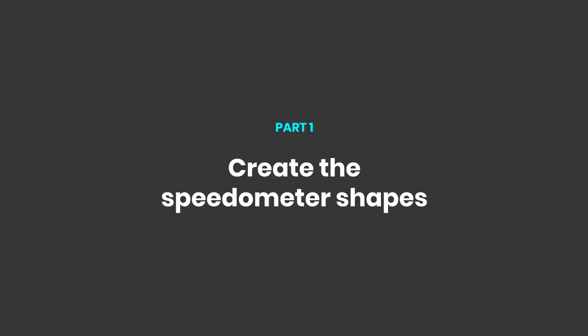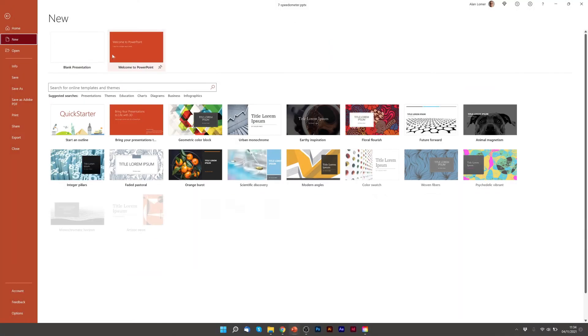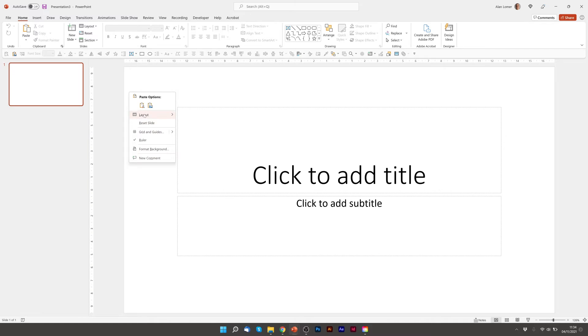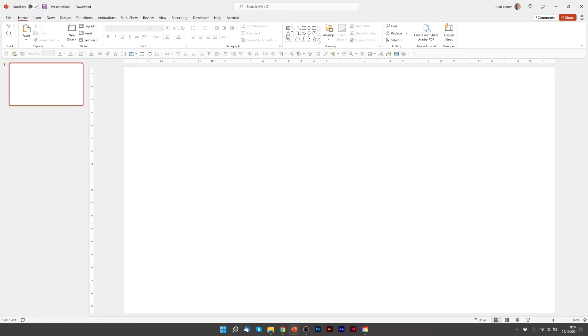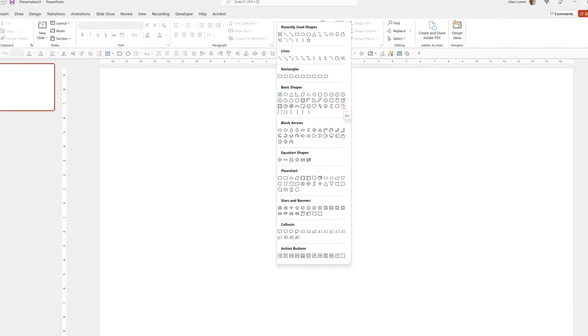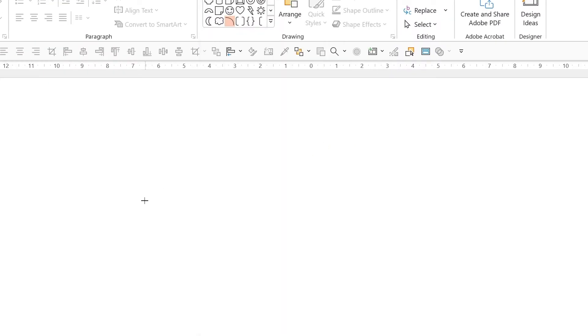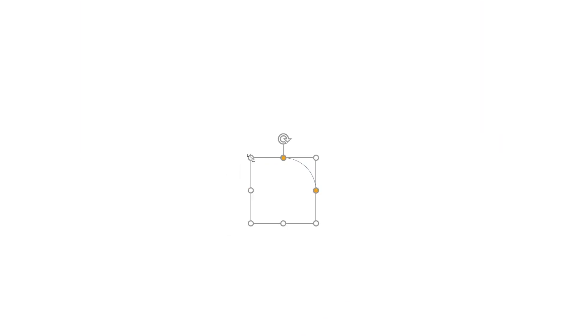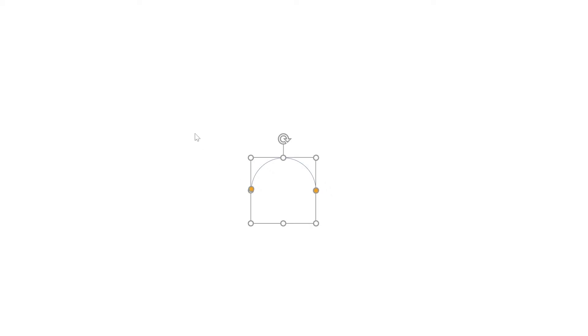First we're going to go into the editor in PowerPoint. We're going to go File, New, Blank Presentation, Layout, Blank. The next thing we're going to do is to create the arch. So we click on Shapes and we choose Arc from Basic Shapes, then click once to draw it out. We'll now drag the yellow dot down until we've made the outline shape.